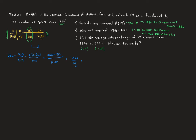1700 divided by 15: 5 goes into 1700 to give us 340, but that's not divisible by 3, so I'll leave it as 340 over 3. The units are the Y units — millions of dollars — per the T units — years. So that's the rate at which TV revenue is growing in millions of dollars per year.